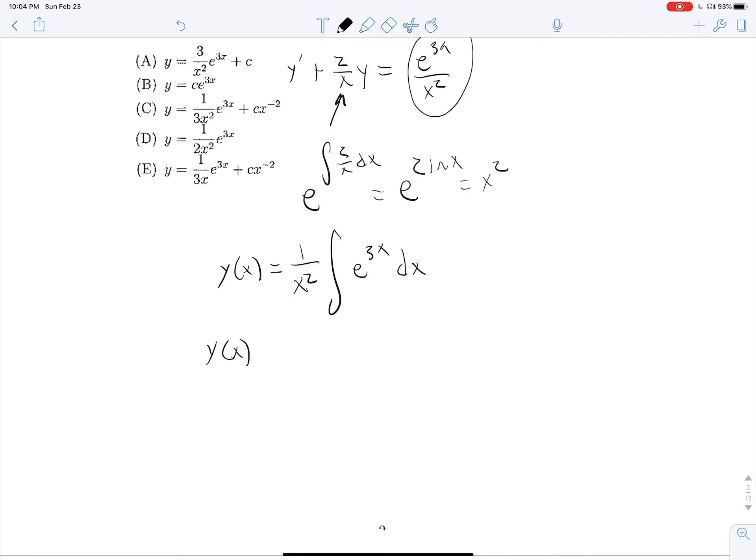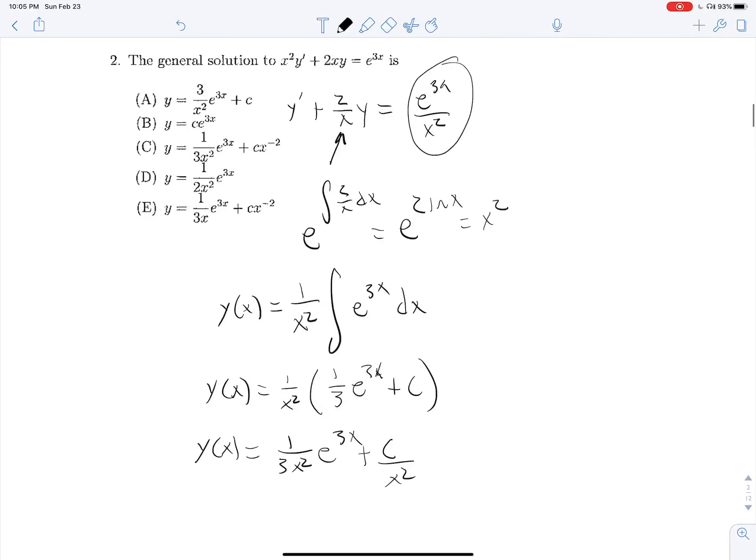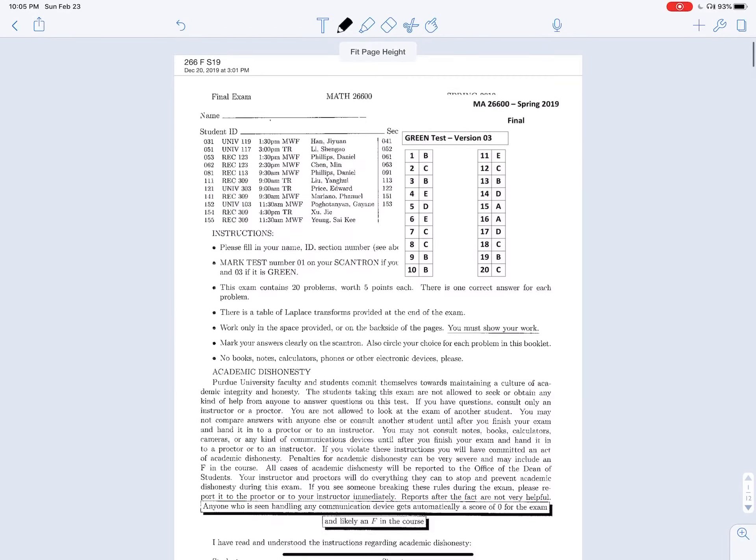Slap a dx on the end there, and we are ready to solve. So this is going to give us y of x is equal to 1 over x squared times 1 third e to the 3x plus c. And this is the same thing as y of x is equal to 1 over x squared, e to the 3x plus c over x squared, which is the same thing as option c. So 2 is c.